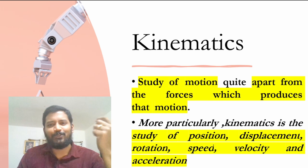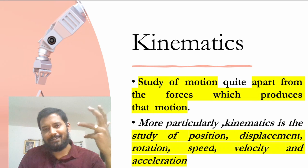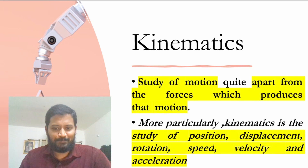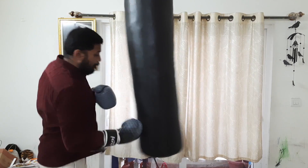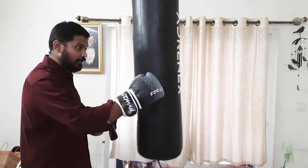Let me give you an analogy so you will be able to remember kinematics rather than just memorizing the definition. In kinematics, when I am punching, the force which is causing this motion is not being considered. Only the displacement, the velocity with which it is moving, and the acceleration with which it is moving are considered. This is a reciprocating motion being converted into a rotary motion — the force is not considered, only the velocity and motion matter.